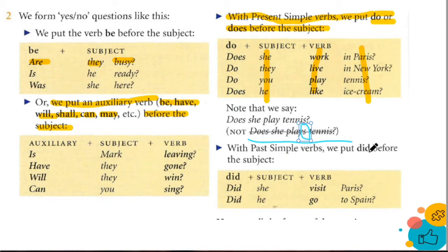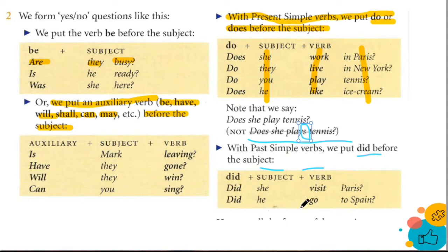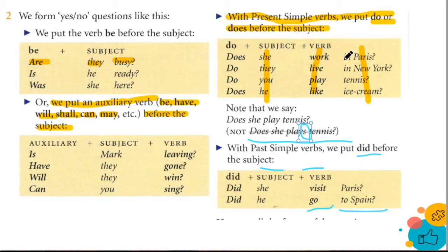With past simple verbs, we put 'did' before the subject. Ponemos did antes del sujeto y del verbo. Did she visit Paris? Did he go to Spain? Entonces, nosotros utilizamos esto de esa forma: primero va el auxiliar, el sujeto, el verbo y el complemento. Eso es lo que estamos entendiendo de las preguntas.